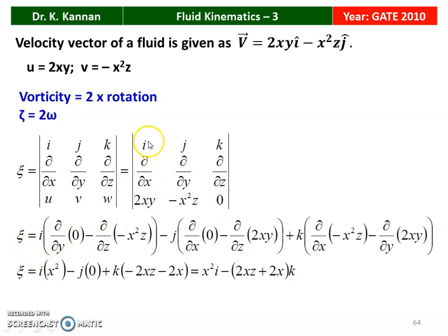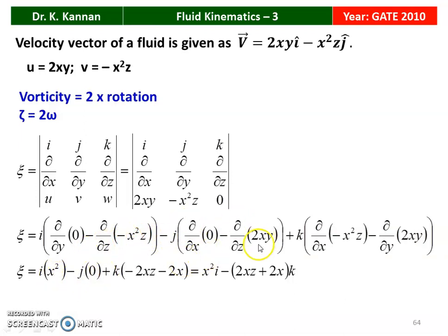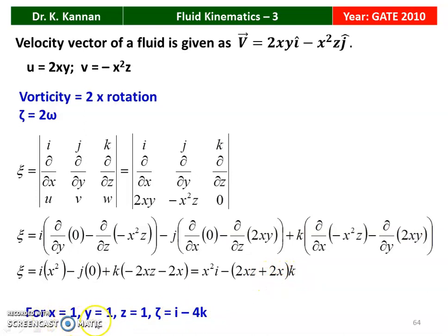The vorticity is calculated as the determinant with rows (î, ĵ, k̂), (∂/∂X, ∂/∂Y, ∂/∂Z), (U, V, W). Expanding: the î component gives ∂(0)/∂Y - ∂(-X²Z)/∂Z = 0 - (-X²) = X²; the ĵ component gives ∂(0)/∂X - ∂(2XY)/∂Y = 0 (contributing zero); the k̂ component gives ∂(-X²Z)/∂X - ∂(2XY)/∂Y = -2XZ - 2X. Substituting X = 1, Y = 1, Z = 1: vorticity = î - 4k̂, which is the answer.